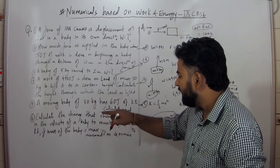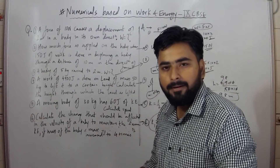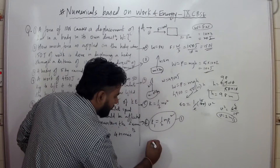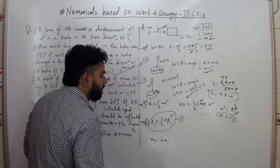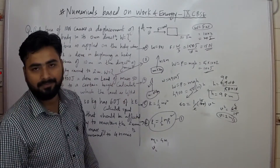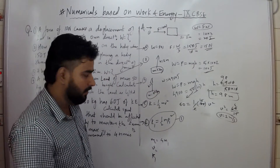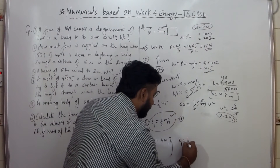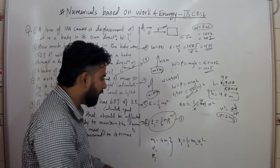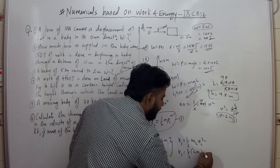Now kinetic energy must remain the same. We have to see that the mass of the object is 4 times the initial mass. Let the new velocity be V2. The kinetic energy here must also remain K1. So the formula will be: K1 is equal to half M2 V2 squared, where M2 is 4M1. So kinetic energy is equal to half times 4M1 times V2 squared.